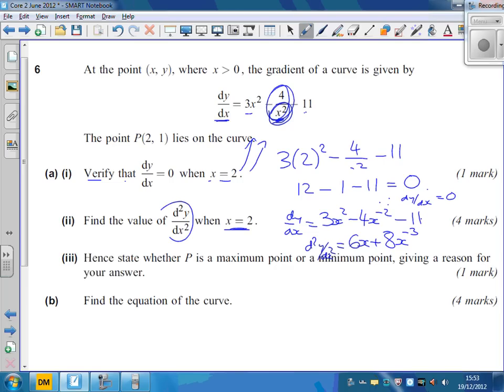Times by the power, and the power goes down by 1. Times by the power, and the power goes down from minus 2 down to minus 3. This one here, the 11, just disappears. And it says, find out the value of this when x is equal to 2. So, at x equals 2, d²y/dx² is 6 times 2 plus 8 times 2 to the power - well, that's 1 eighth. 8 times 1 eighth. So I think we've got an answer there of 13.